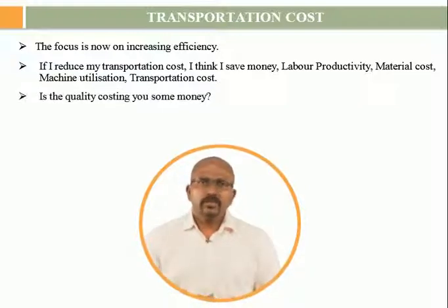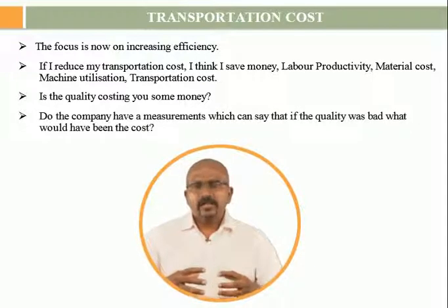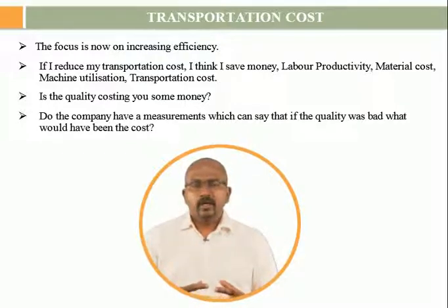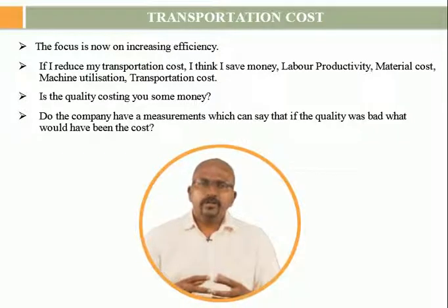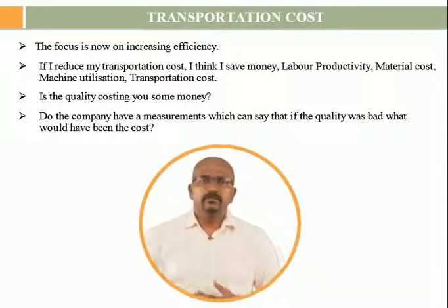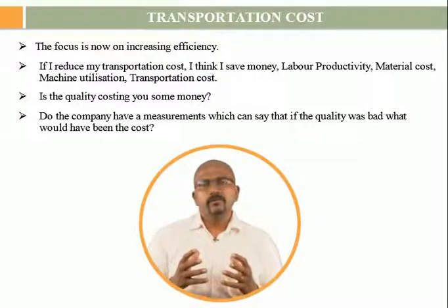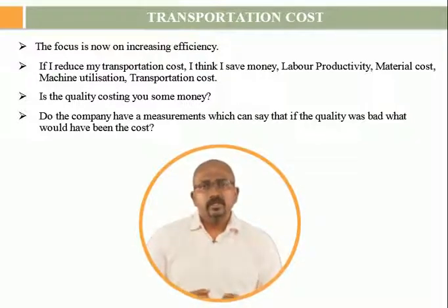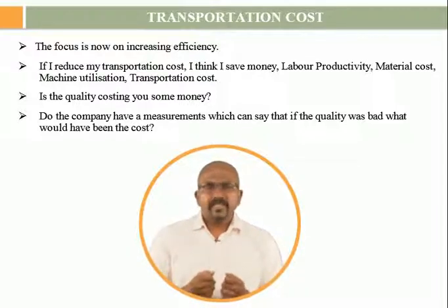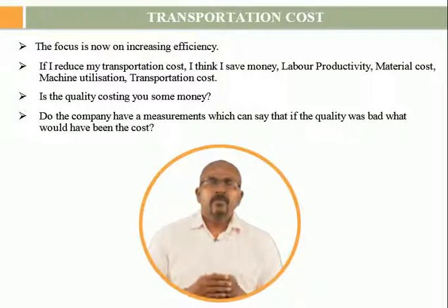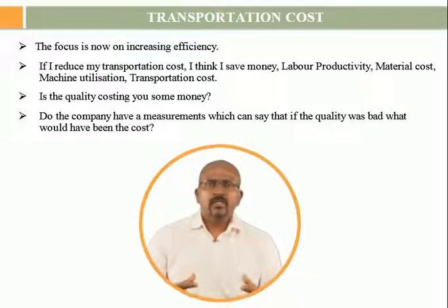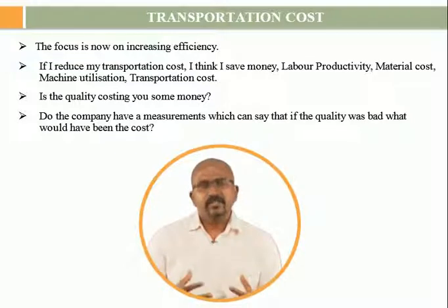Do companies have a measurement which can say that if quality was bad, what would have been the cost? So if the cost of quality is going down, I am improving my quality. All these local measurements or efficiency measurements used in a manufacturing organization come from the mindset of equation number 1: only cost is in my control. However, a question still remains — after doing so much about cost, what has been the empirical evidence in cost reduction trends in these manufacturing companies?